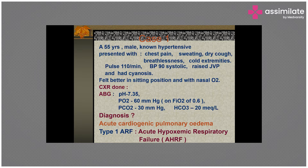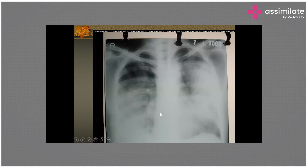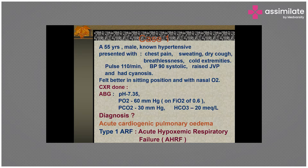Looking at the second interpretation of this case — this patient has cardiogenic pulmonary edema. On the X-ray, there are homogeneous white opacities bilaterally, which we also call a bat-wing appearance. However, acute cardiogenic pulmonary edema has been removed from the definition of ARDS.